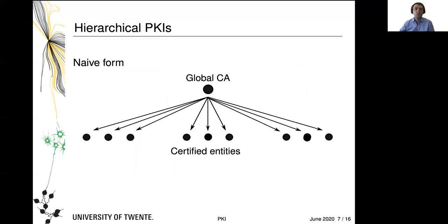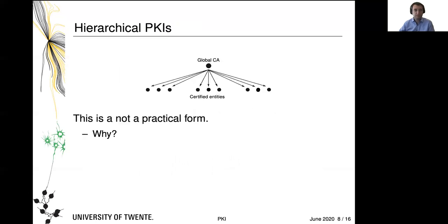Here is the super naive form of a hierarchical PKI. In essence, we have one global certification authority and that one issues certificates for everyone who wants to have one. So we have a global CA and certified entities. The trouble with almost everything that is naive is that it is not a practical form — you may want to think about it a little bit.